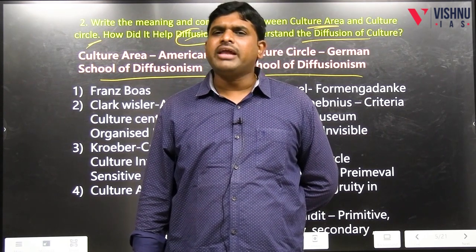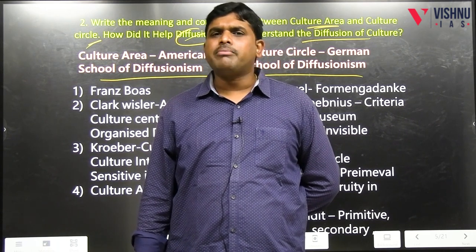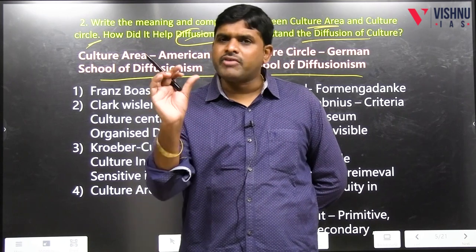First, introduction: diffusionism was a school which evolved as a critic for Classical Evolutionism, who believes that man is basically uninventive and he likes to copy cultures from other societies. In that format, three schools of diffusionism evolved: German, British, and American. Of those three, two are very popular — German school of diffusionism (bracket: culture circle) and American school of diffusionism (culture area). First paragraph: introduction.